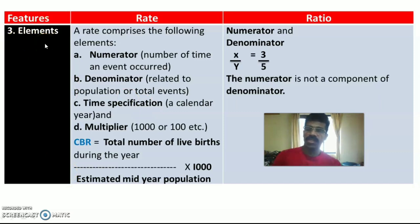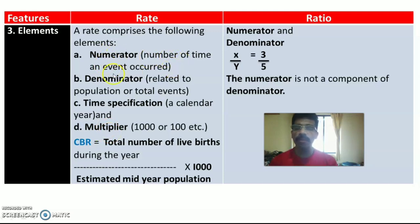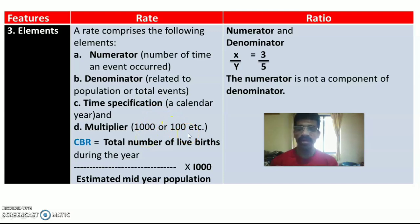The third difference is related to elements. A rate comprises four main elements: numerator, denominator, time specification, and multiplier. The numerator is the number of times an event or incidence occurred. The denominator is related to the population or total events or total occurrences. Time specification is usually a calendar year. The multiplier is commonly 1,000, or it can be 100 or 1 lakh.